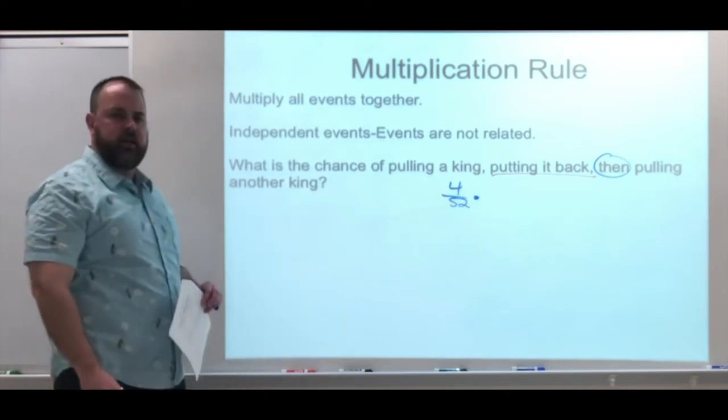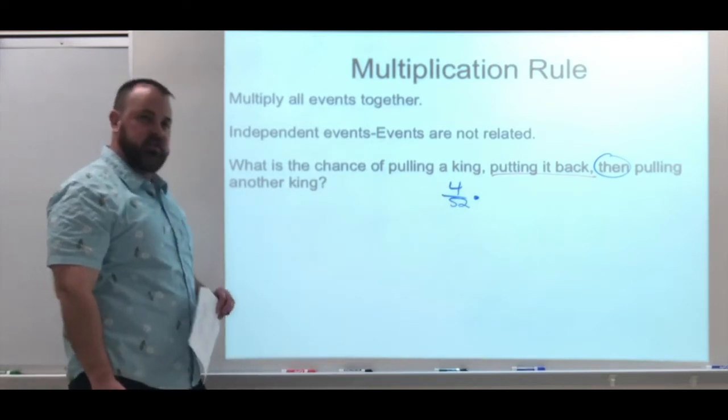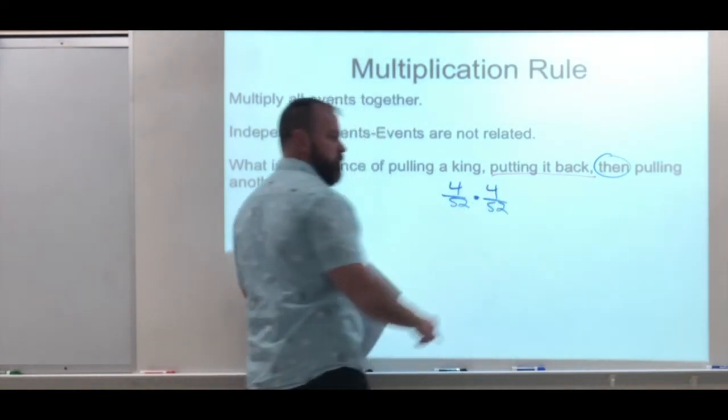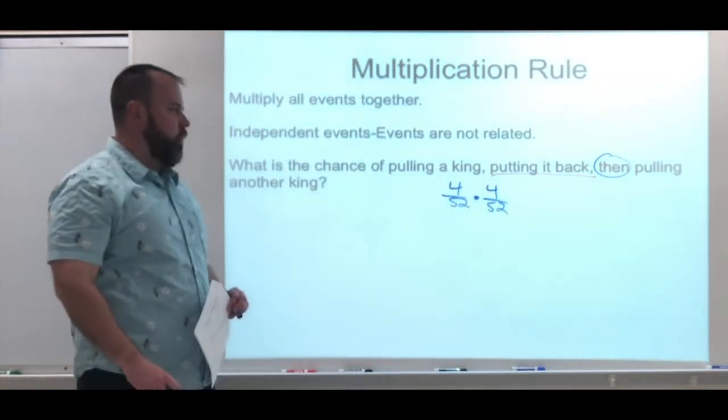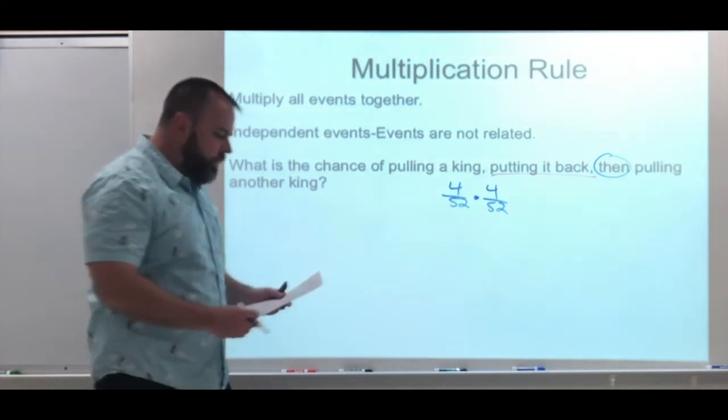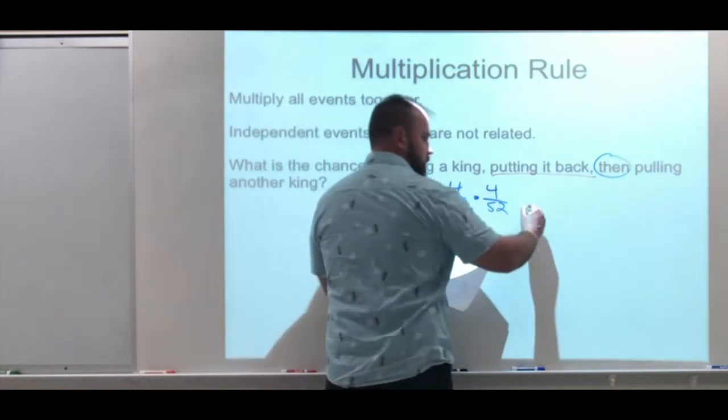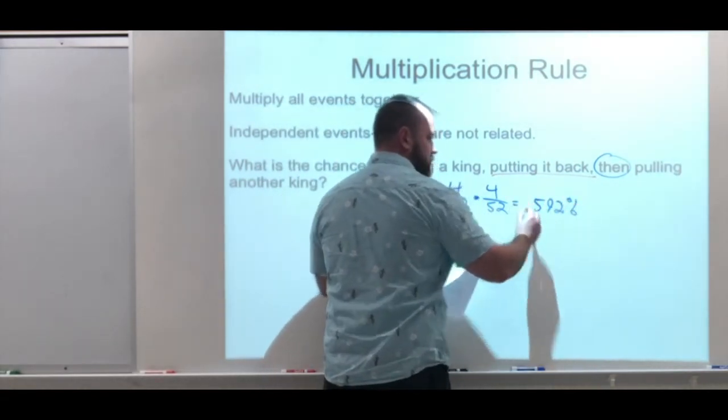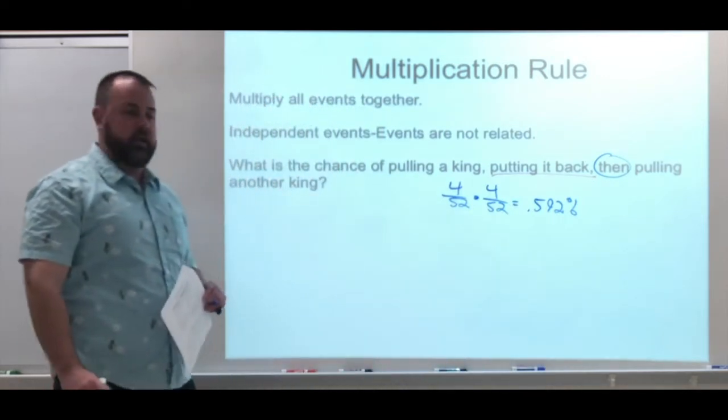when I think about the second king now that I have to pull, there's still four in the deck. And there's still 52 total. So right there is my multiplying. So my answer is going to be a little smaller than for the addition rule. For this one, I have it as 0.592 percent.